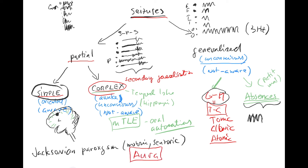The sensation that tells you a generalized seizure is coming is called an aura. A simple partial seizure can itself be an aura before the generalized seizure. Even in primarily generalized seizures, some people have a weird feeling beforehand that they also call an aura — whether it's a focal onset or just a gut feeling that a seizure is coming.